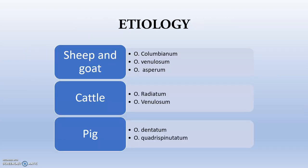Moving to the etiology: in sheep and goat, mainly Oesophagostomum columbianum, Oesophagostomum venulosum, and Oesophagostomum asperum. In cattle, it's Oesophagostomum radiatum and venulosum. Venulosum is present in both large and small ruminants. In pigs, there is mainly Oesophagostomum dentatum and Oesophagostomum quadrispinulatum.